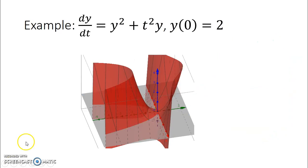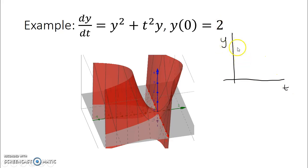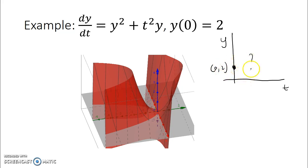Let's test this on examples. Here we have the differential equation dy/dt equals y squared plus t squared times y, with initial condition t₀ equals 0, y₀ equals 2. We want to see if it's possible to find a solution to this differential equation on the ty plane — specifically, we want to know the behavior of y over time, and whether there is a solution passing through the initial condition (0, 2).